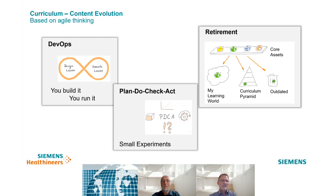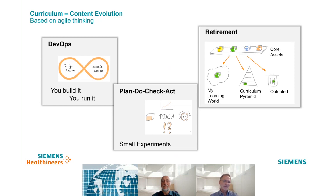As you can imagine, if you add new trainings you also need to retire some existing trainings which might already be outdated. For that purpose we have different approaches. One is to move pre-existing content, if it has become more or less public knowledge, to 'My Learning World' — a Siemens-wide set of training content accessible by all employees — or move it to lower, more basic training levels in the training pyramid. Obviously, if the content is already outdated, it will be completely removed from the core asset base. This process is not a planned action executed once a year; it is an ongoing process which is part of the standard housekeeping activities.